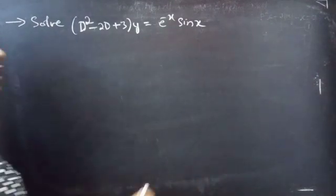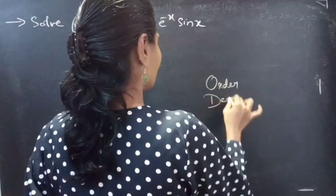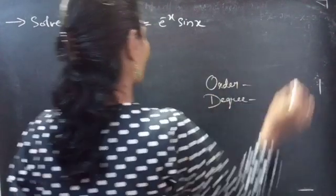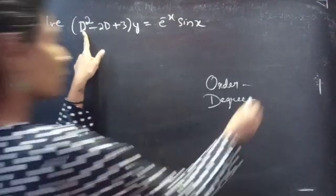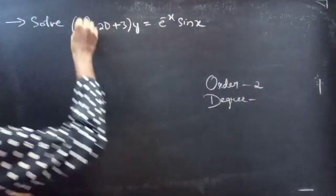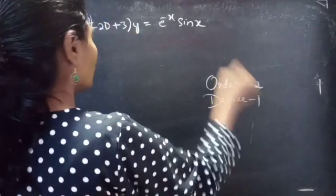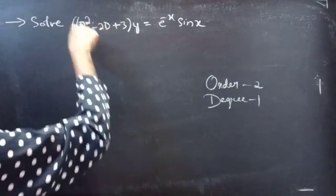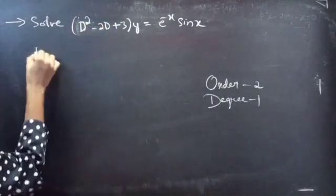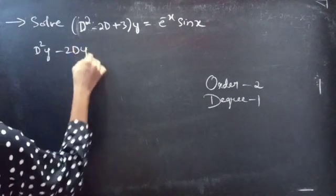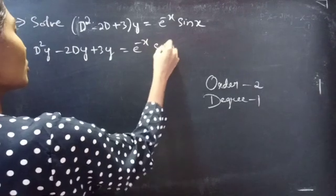Firstly, let's find the order and degree of the given differential equation. Identify the highest derivative — here d² is the highest derivative, so the order will be 2, and the highest power of the highest derivative is the degree, which is 1. We write the equation as d²y - 2dy + 3y = e^(-x)·sin(x).